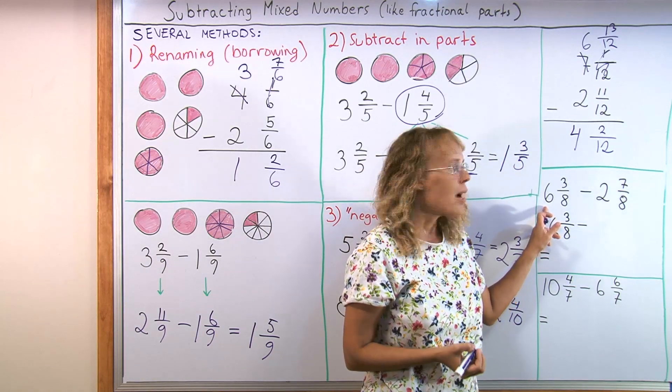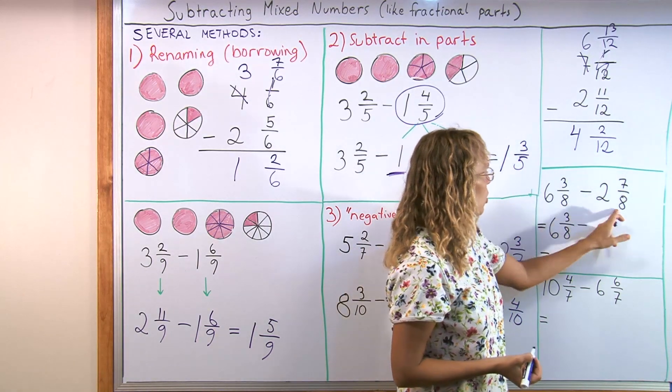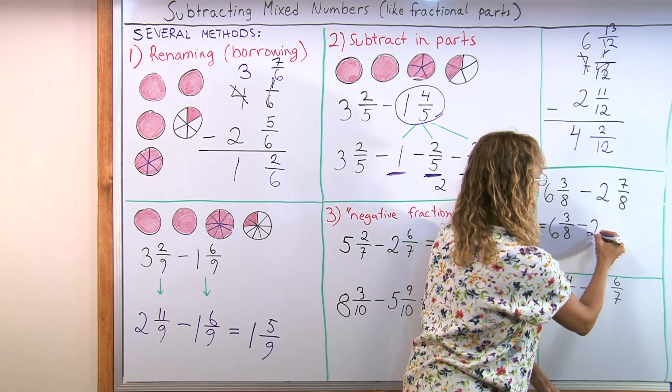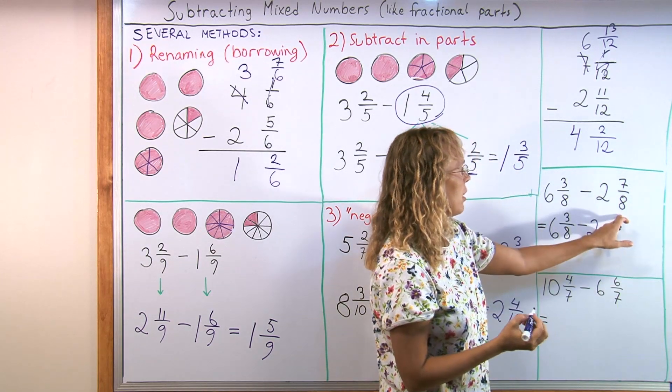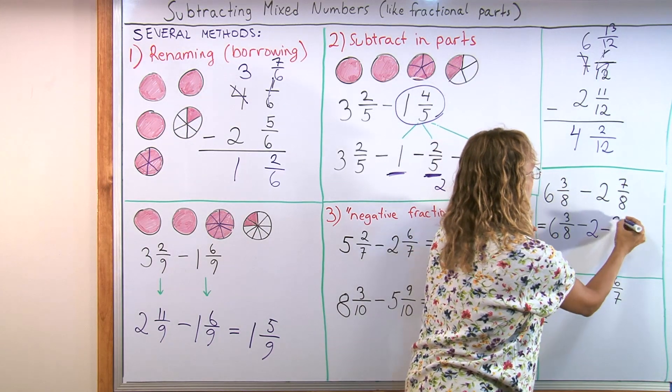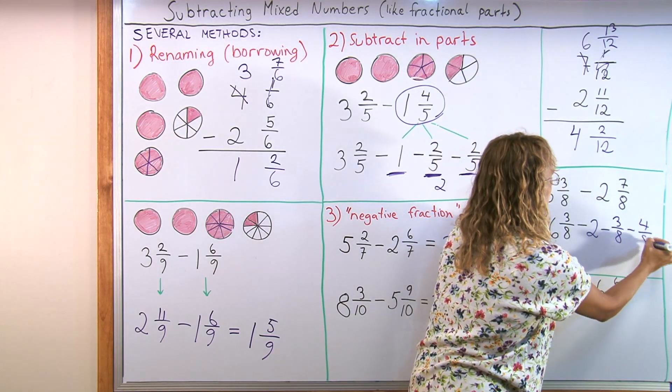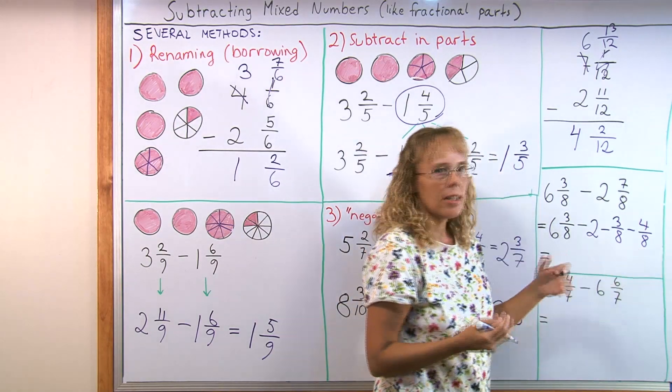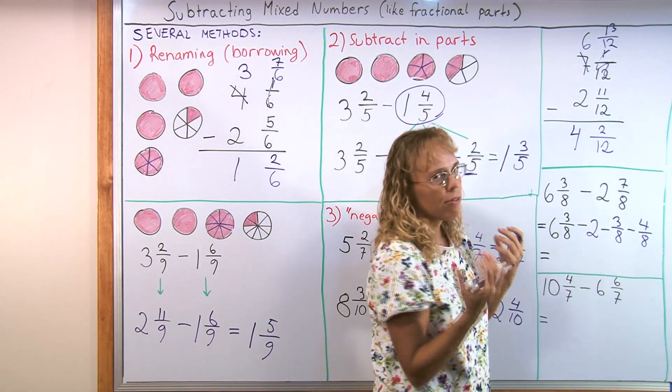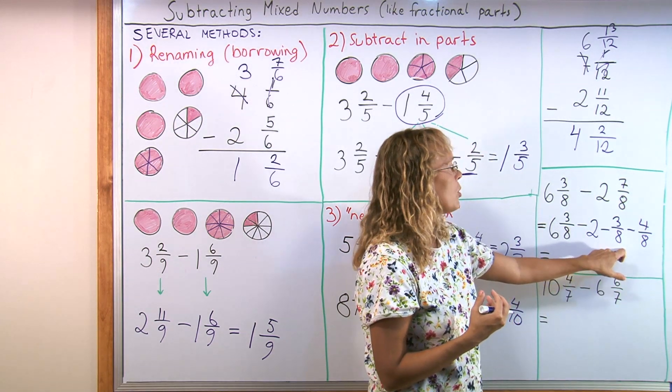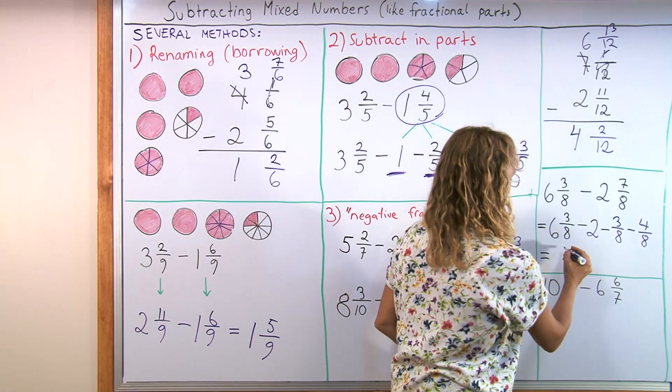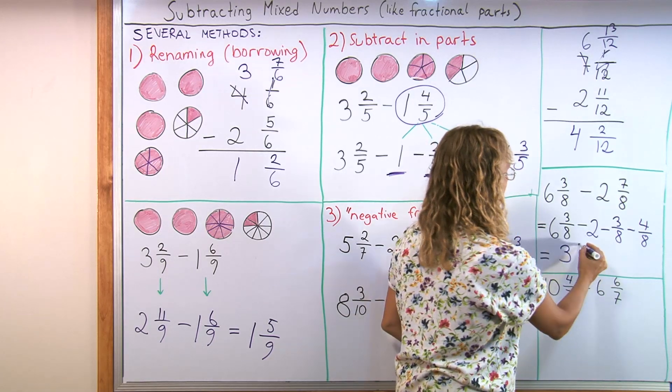Now I'm gonna subtract in parts. So I take my number 6 and 3/8. And take away first the 2. And then 7/8 I break it into 2 parts. So that I first take away whatever matches it is. 3/8. And then what's left? The 4/8. I write it down like this and then I start thinking part by part. 6 and 3/8 take away 2. That would leave 4 and 3/8. Then take away the 3/8 too. So I'm left with 4. And then 4 take away 4/8. So leaves me 3 and 4/8.